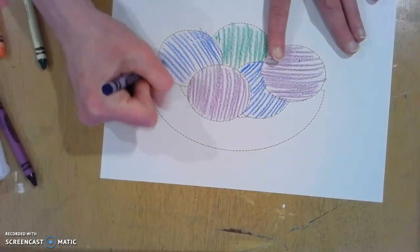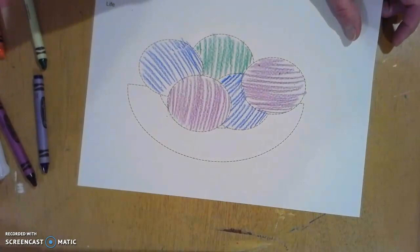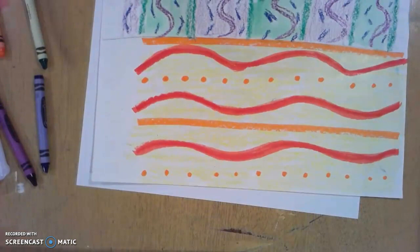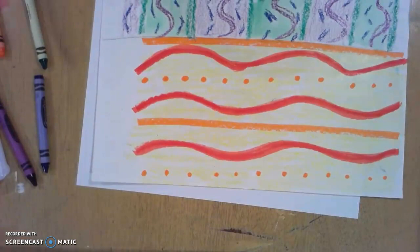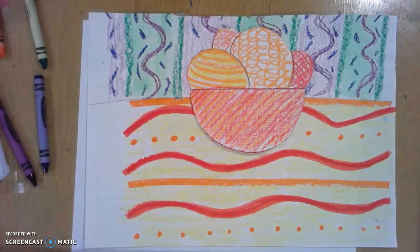Then do the bowl as well. When you are all finished, carefully have your child cut. A lot of times I'll just outline where the cutting would go and have them cut on my outline. Then glue it into the background that we created last week. Take a picture and upload into classroom.